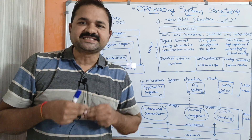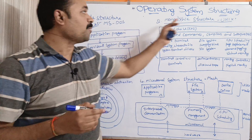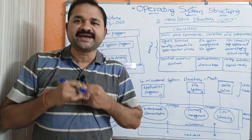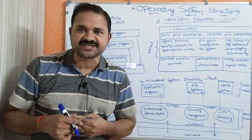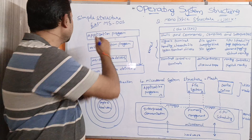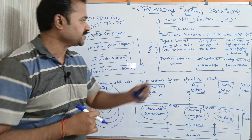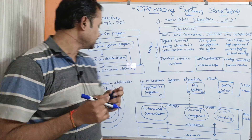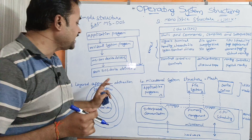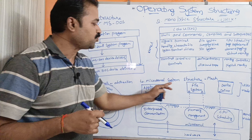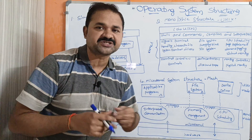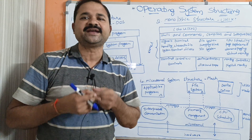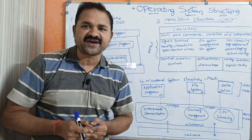Now let us discuss about operating system structures. We have five types: simple structure, monolithic structure, layered approach, microkernel structure, and modular structure. Now let us discuss all these five structures one by one.